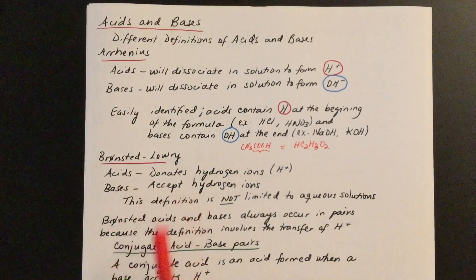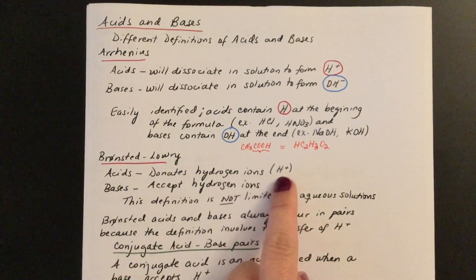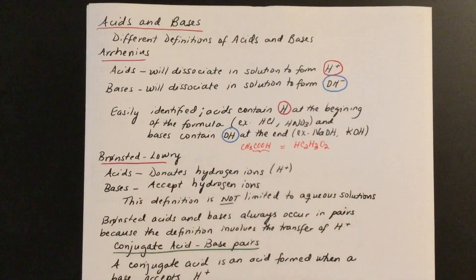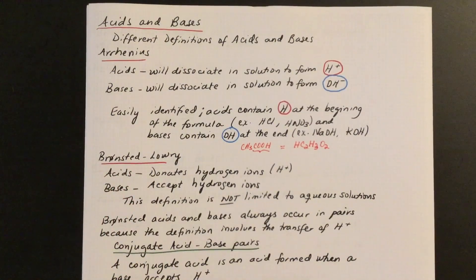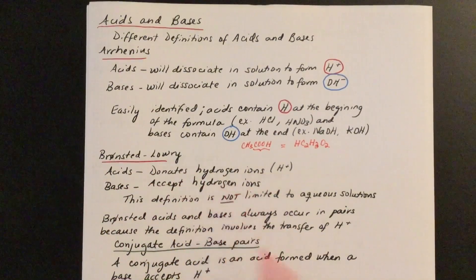The second definition is Bronsted-Lowry. This definition looks similar to Arrhenius but they are not the same. When you have a Bronsted acid, the acid is going to donate the proton and the base is going to accept the proton. This forms pairs of acids and bases — you have your acid and your base as reactants, and as products you get the conjugates, which I'll explain in a moment.